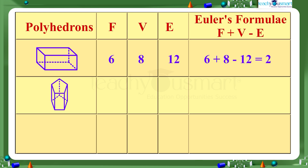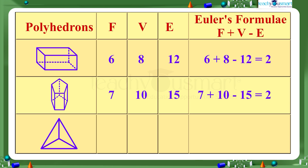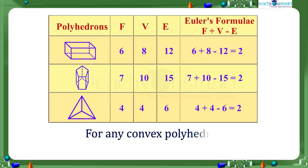In the case of a pentagonal prism, the number of faces is 7, the number of vertices is 10, and the number of edges is 15, so Euler's formula gives 7 plus 10 minus 15 equals 2. In the case of a tetrahedron, the number of faces is 4, vertices is 4, edges is 6, so 4 plus 4 minus 6 equals 2. From these we can say that for any convex polyhedron, F plus V minus E equals 2.